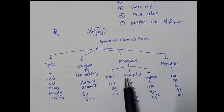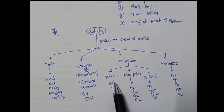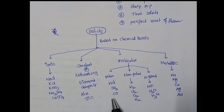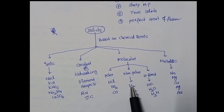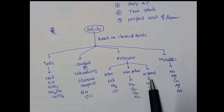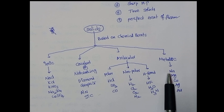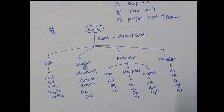Third, molecular crystals, classified into polar, non-polar, and hydrogen-bonded types. Polar molecular crystals have charges, like HCl, SO₂, and CO. Non-polar molecular crystals have no charges — similar atoms like H₂, Cl₂, O₂, N₂. Hydrogen-bonded molecular crystals involve fluorine, oxygen, or nitrogen bonded with hydrogen. Fourth, metallic bonds — all metals like sodium, magnesium, copper, silver, and gold come under this type.